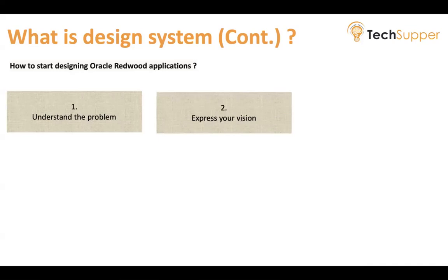Express your wisdom: define your ideal UX by documenting your common scenarios. Forget about edge use cases — focus on the common scenarios that everybody uses. Once you and your stakeholders have agreed on the scenarios, you translate the words into a core task flow and use a journey map.